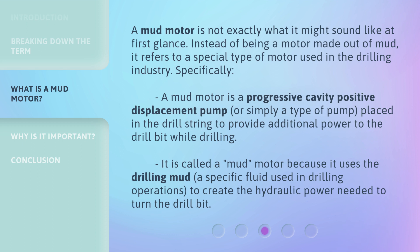Specifically, a mud motor is a progressive cavity positive displacement pump — or simply a type of pump — placed in the drill string to provide additional power to the drill bit while drilling. It is called a mud motor because it uses the drilling mud, a specific fluid used in drilling operations, to create the hydraulic power needed to turn the drill bit.